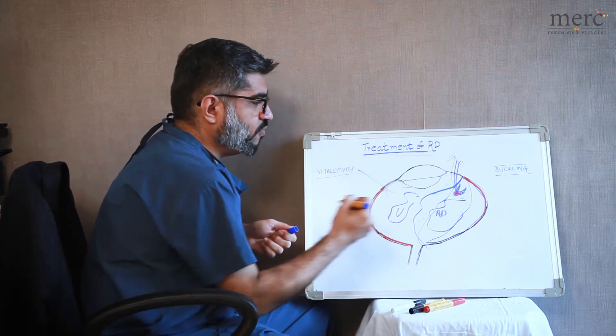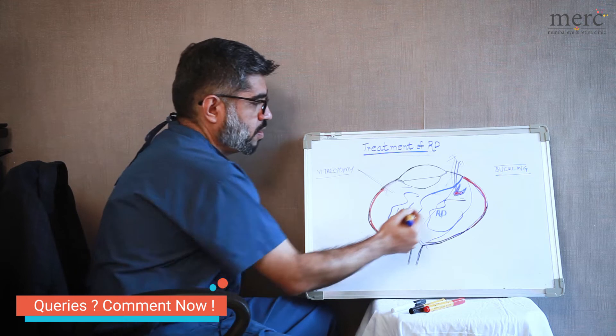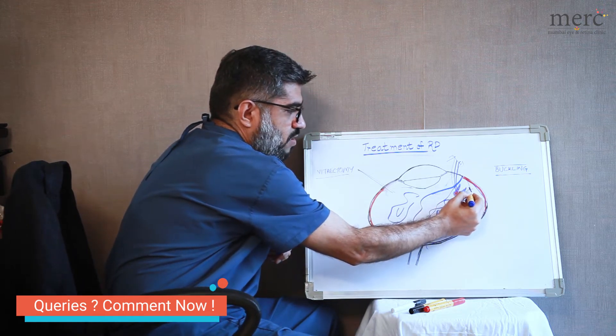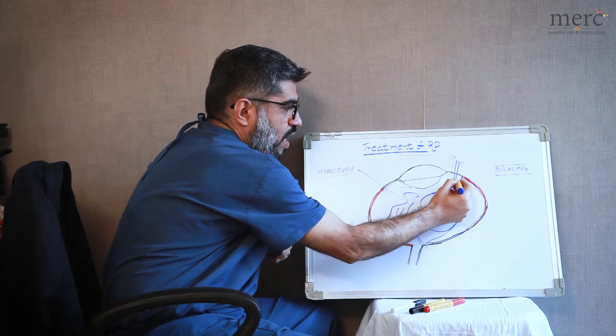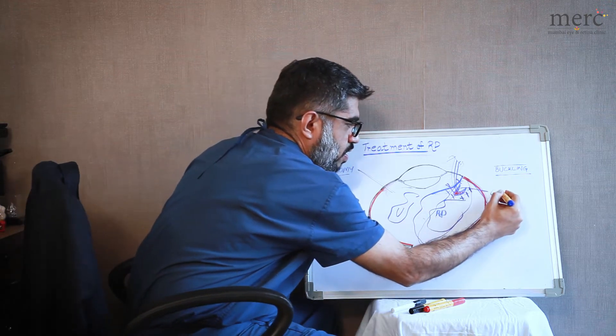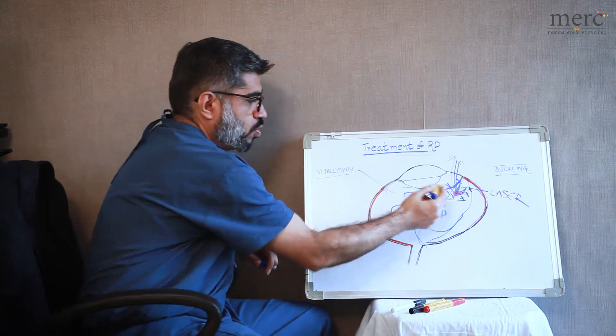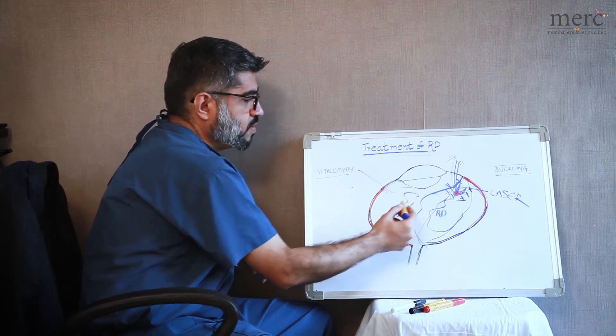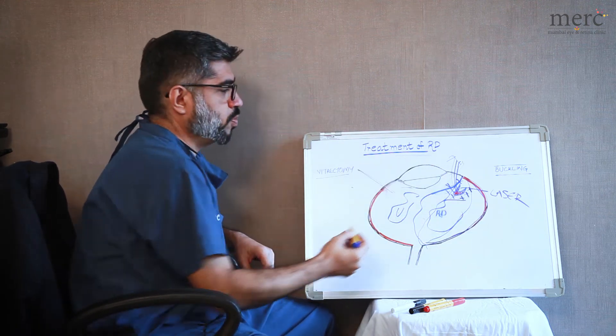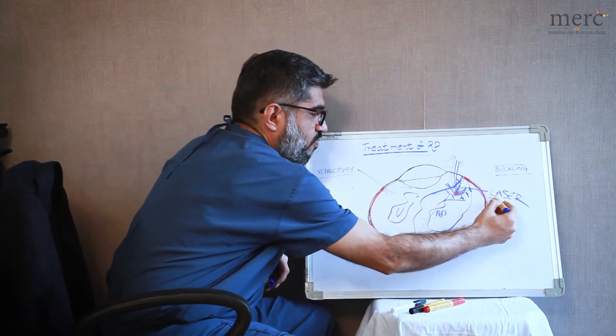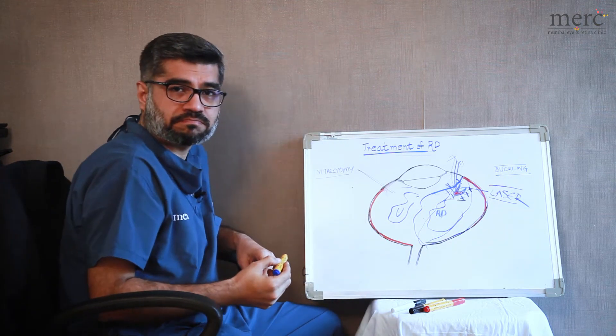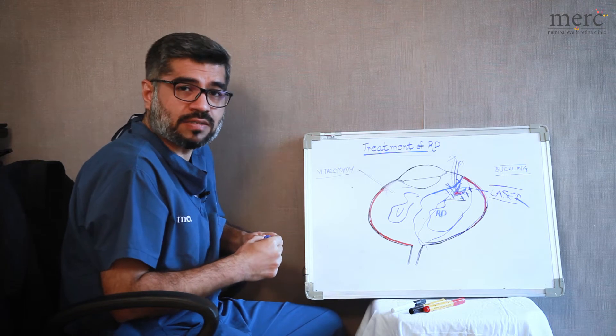What is done after the retina is reattached is this tear is sealed with the help of laser. So one, we remove the gel. Second, we put the retina back in its position. Third, we seal the retinal tear with laser.